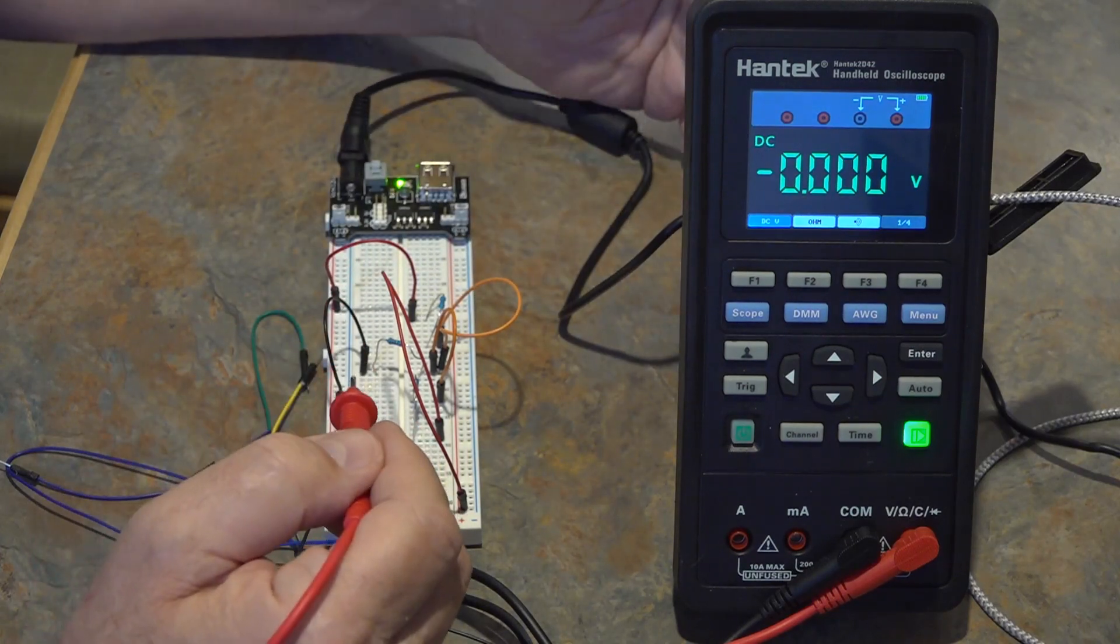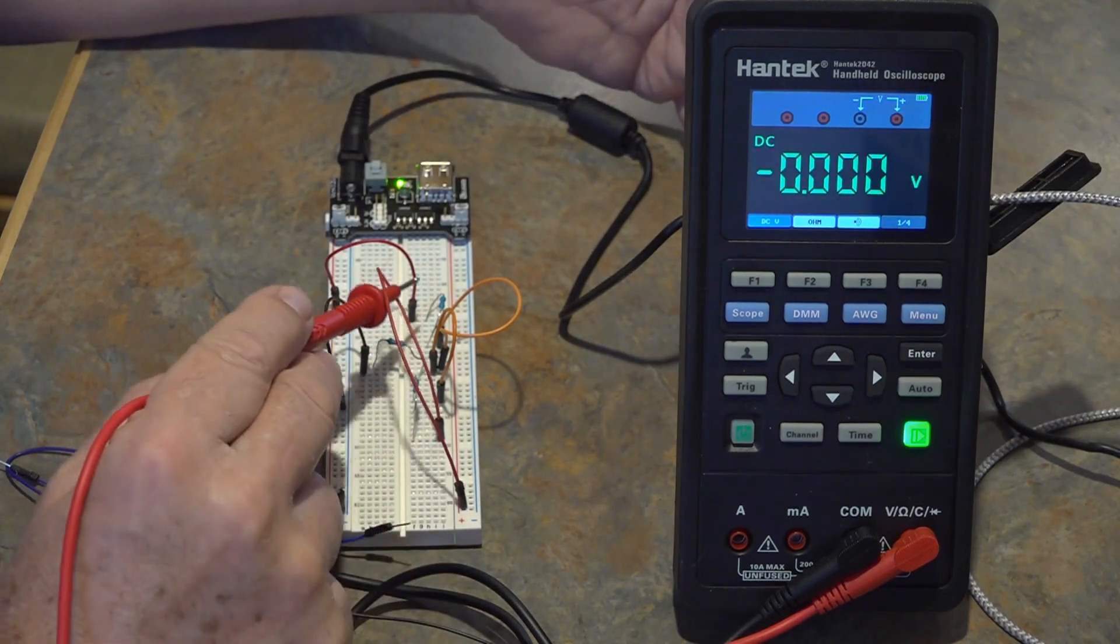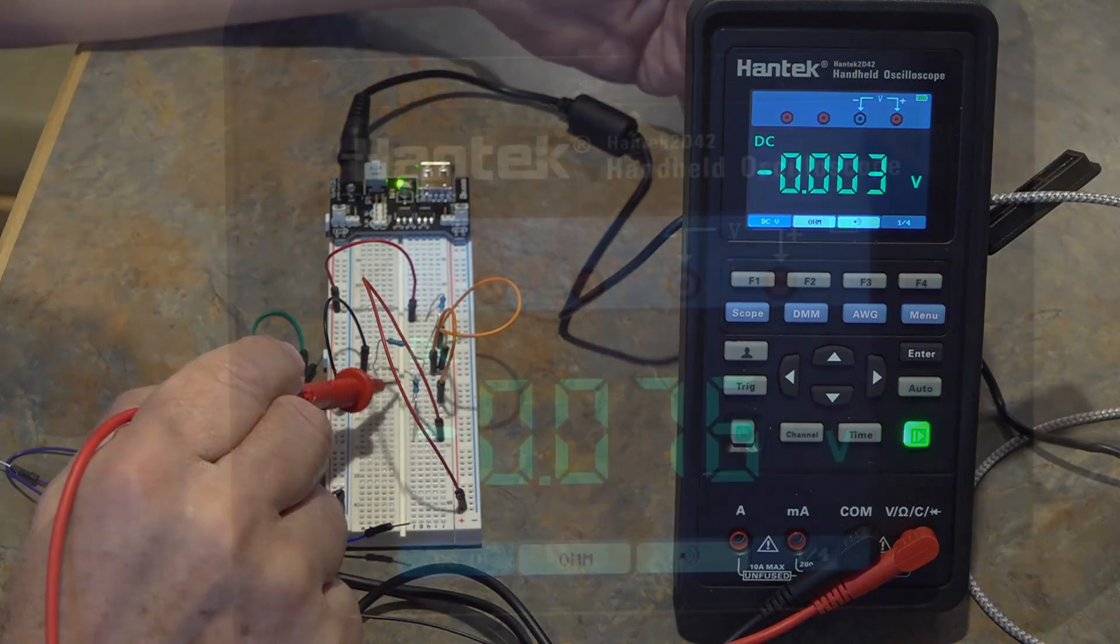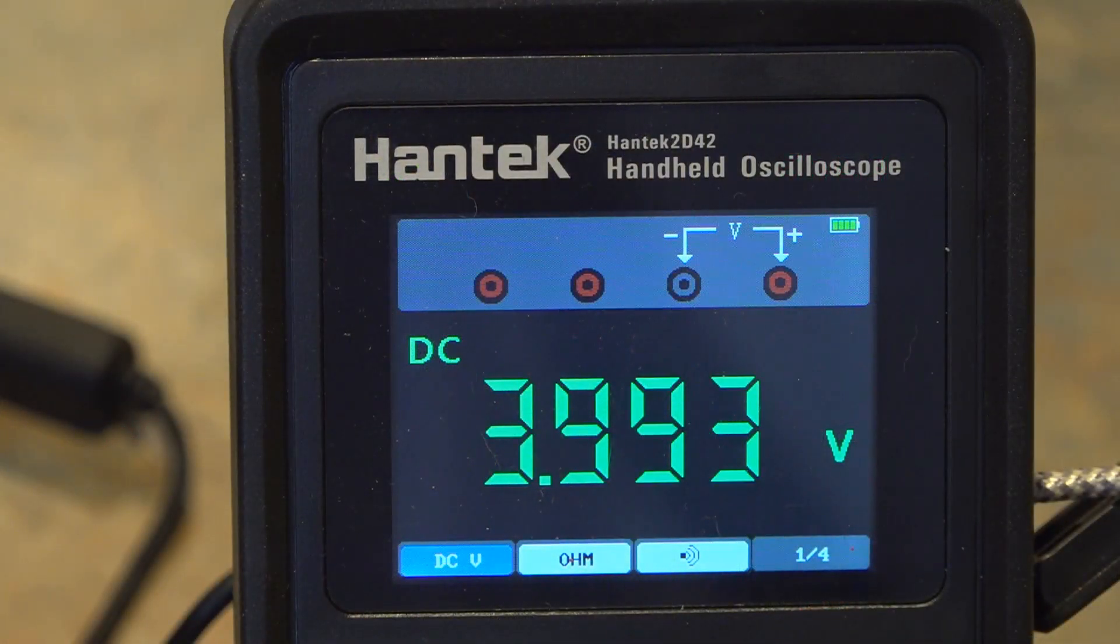And there I've hooked up the 5 volts again. So now if I measure the node C you'll see I'm measuring 3.994, 993 volts something like that. So it's bouncing a little bit.